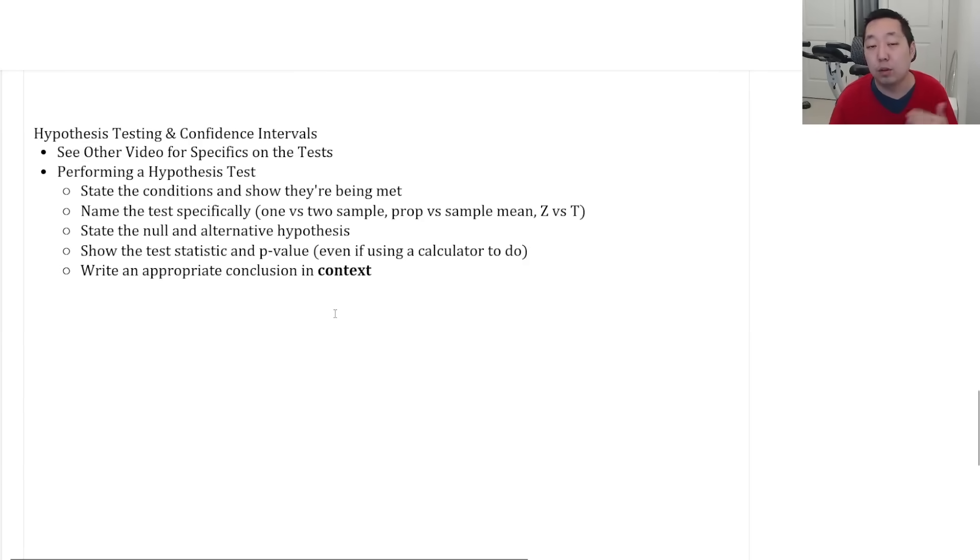Hypothesis testing. I have another video where I go through all the different hypothesis testings. But if you're performing a hypothesis test or confidence interval, here's what you want to do. You want to state the conditions and show how they're being met in the question. They're usually pretty short to show, but make sure you understand the three conditions for all of the normal distribution issue ones and then the conditions for chi-squared. There's always three conditions. It's the random, independence, and then for the z or t tests it's normal conditions, and for chi-squared it's the expected counts. But know how they're different for proportions, for sample means, for the chi-squared. That other video kind of goes through that.